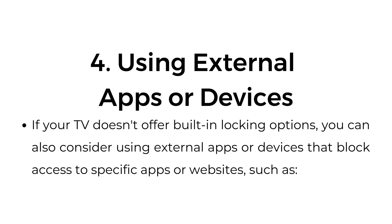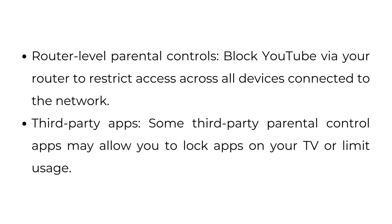Number four: using external apps or devices. If your TV doesn't offer built-in locking options, you can also consider using external apps or devices that block access to specific apps or websites, such as router-level parental controls — block YouTube via your router to restrict access across all devices connected to the network — or third-party apps that may allow you to lock apps on your TV or limit usage.